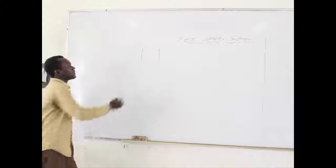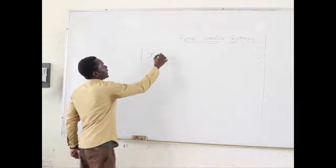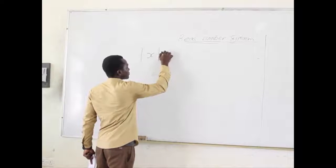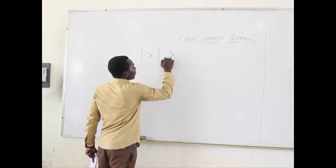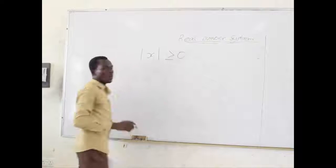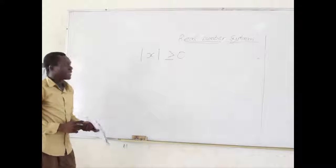So when we have absolute X, it simply means the value is always greater or equal to zero. So there is no way it can give you a negative number.